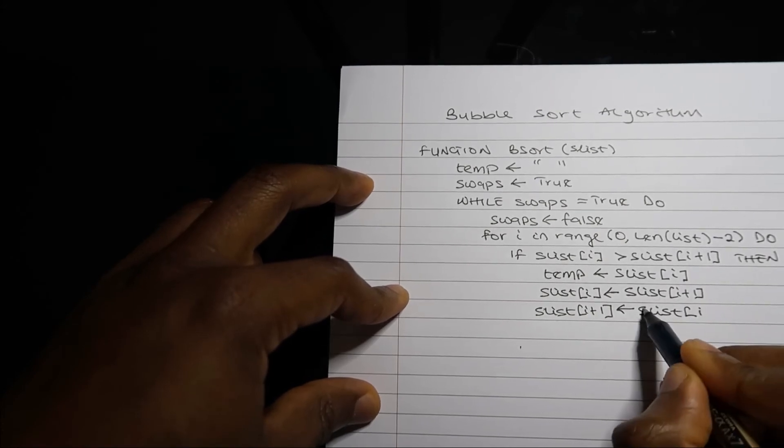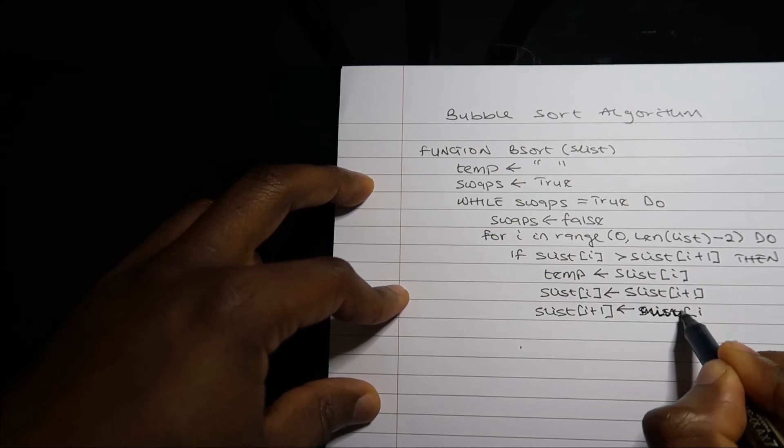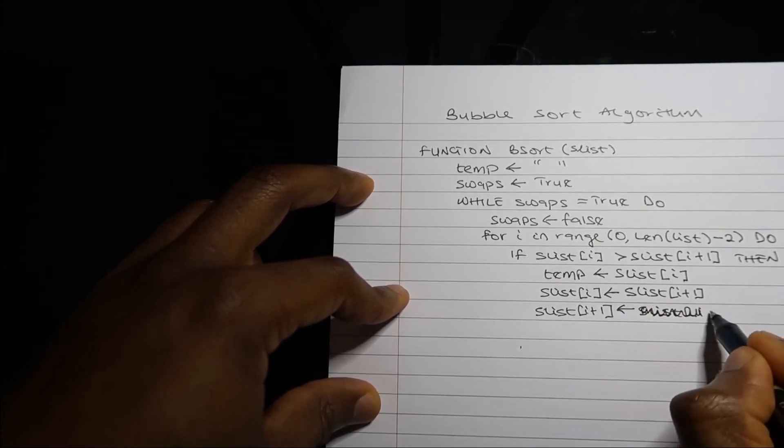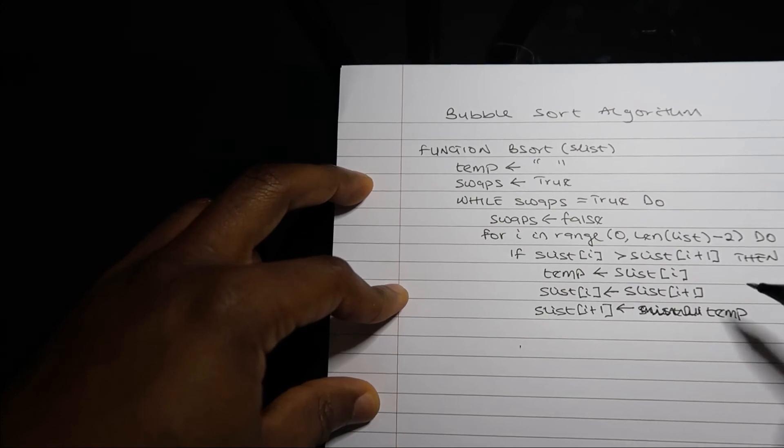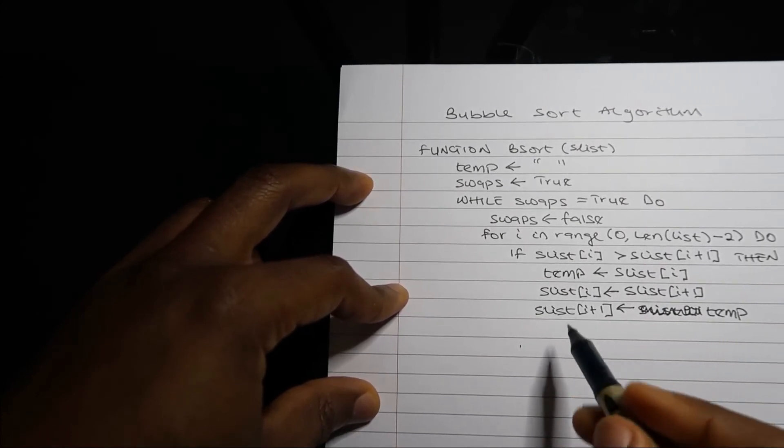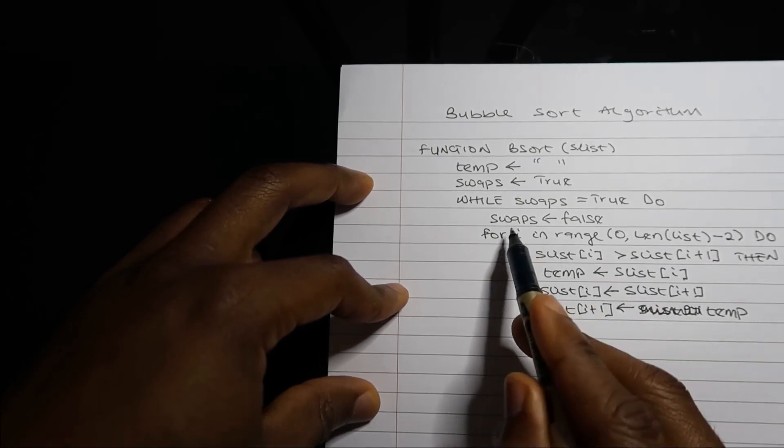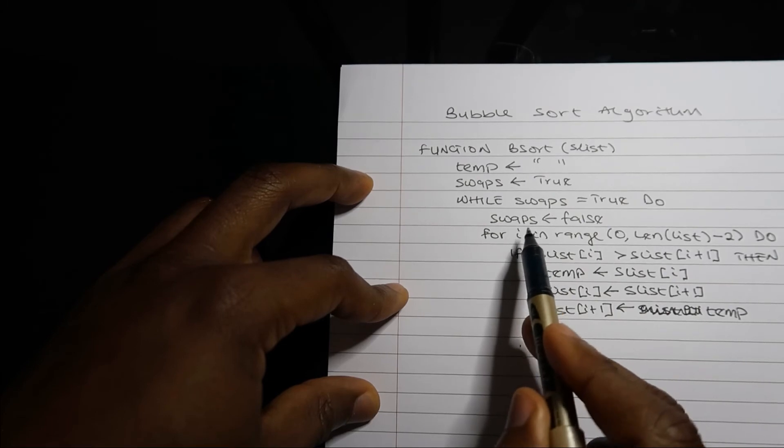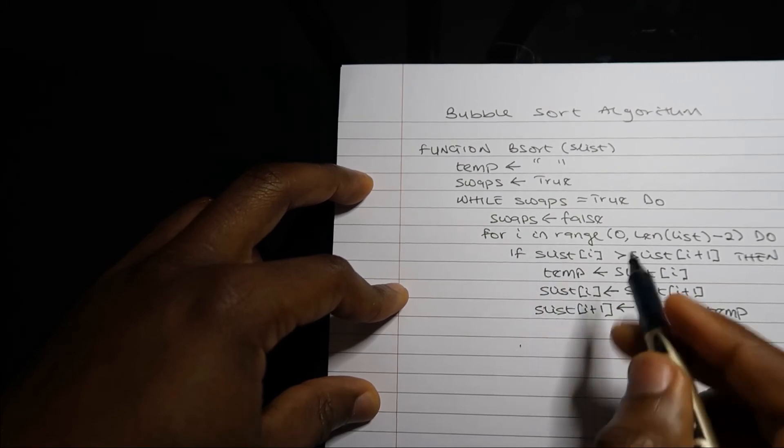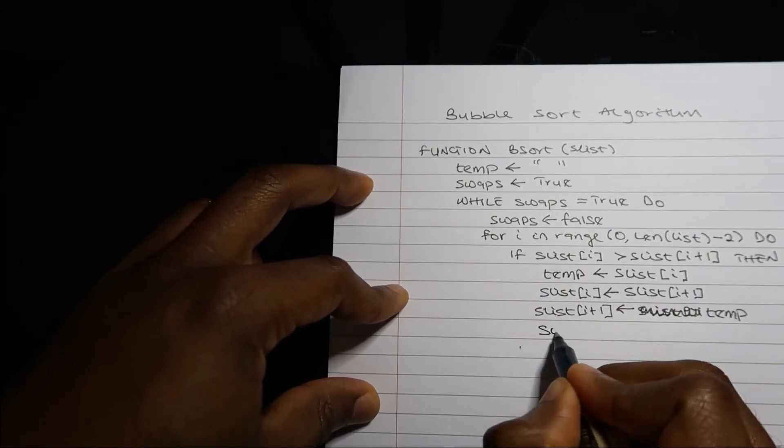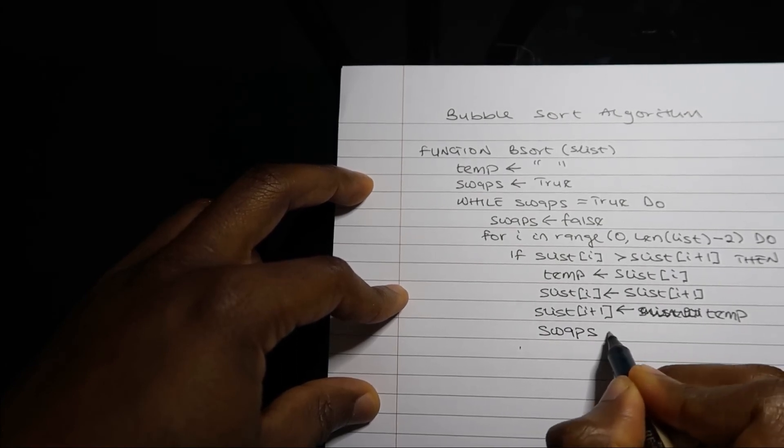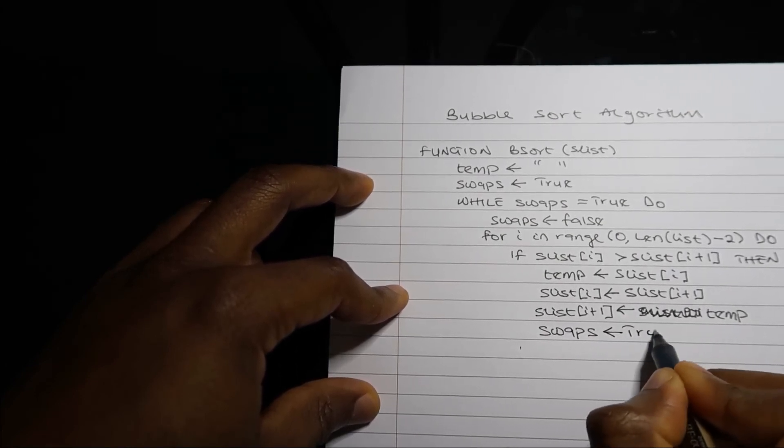In fact, I'm not putting slist[i], I'm sorry. I'm putting temp, because slist[i] no longer exists. Now, because I've just done this, it means I'll have to reset swaps to true. So I'll change my swaps back to true.